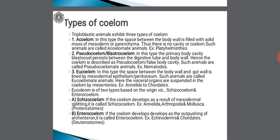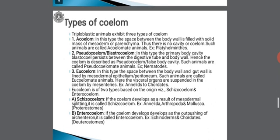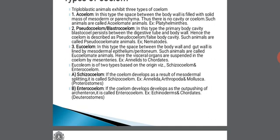The eucoelome is of two types based on origin: schizocoelome and enterocoelome. First, schizocoelome — if the coelome develops as a result of mesodermal splitting, it is called schizocoelome. Examples: annelids, arthropods, and molluscs, collectively known as protostomes. Second, enterocoelome — if the coelome develops as a result of outpushing of archenteron, it is called enterocoelome. Examples: echinoderms and chordates, collectively called deuterostomes.